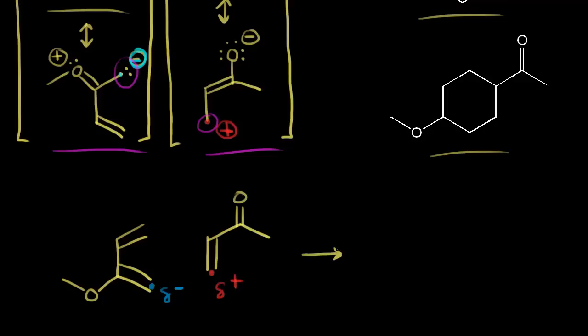Remember, the Diels-Alder reaction is a concerted movement of six pi electrons. So these pi electrons are going to move into here to form a bond between these two carbons. These pi electrons move into here to form a bond. And these pi electrons move down.